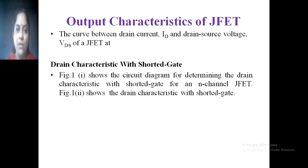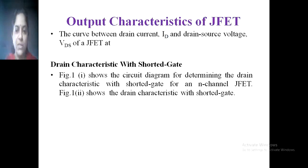Let us see one by one. First we are going to see the output characteristics. The output characteristics is the curve between drain current ID and drain-source voltage VDS of JFET at constant VGS. This output characteristics is divided into two parts: when the gate is shorted and when some voltage is applied on the gate. Figure 1 shows the circuit diagram for determining the drain characteristics with shorted gate for an N-channel JFET.